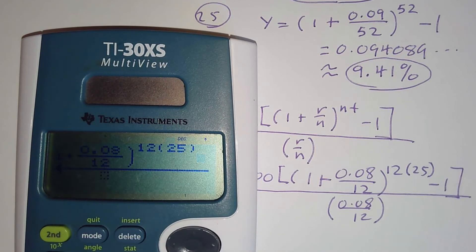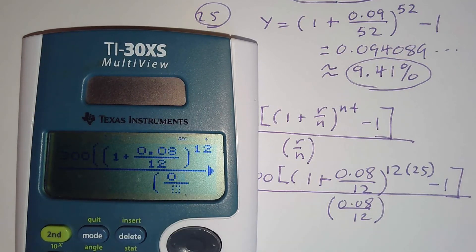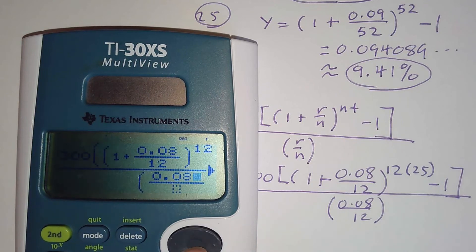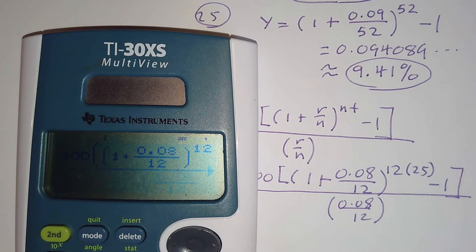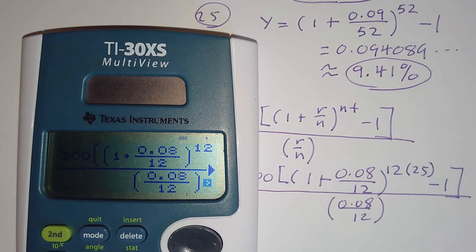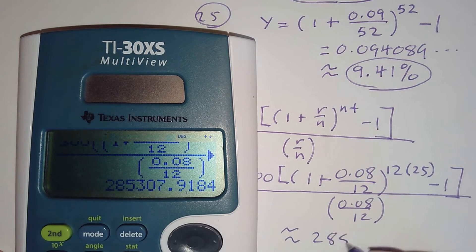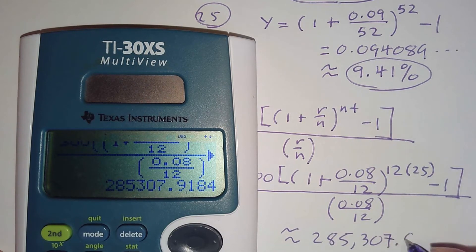All right, so let's go ahead and load that into the calculator. So we're going to be sure you go ahead and wrap it up there with the fraction key there. All right, so we should have it all in there, and then we're just going to hit enter. And again, we're going to go ahead and round to the nearest cent. So this would be $285,307.92.